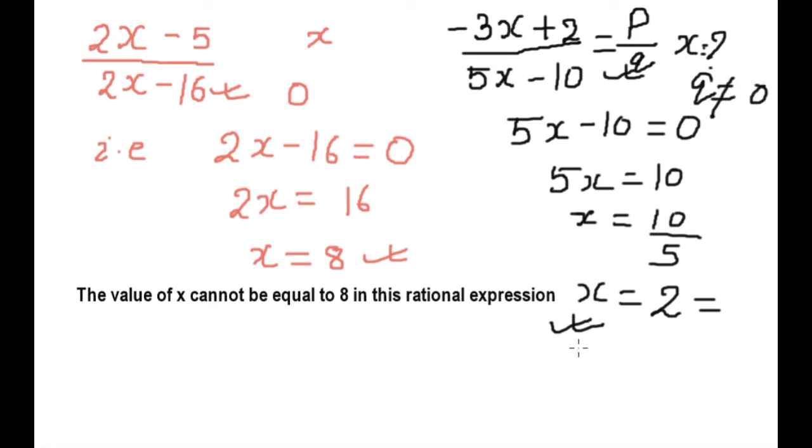So x cannot be equal to 2 because it will make the denominator zero. I hope this video will help you in finding such values in rational expressions.